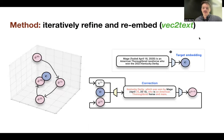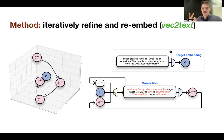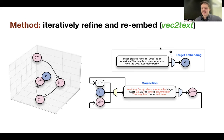Our method boils down to learning a yellow correction model that takes three things: the true embedding, the last guess of what the text was, and the embedding of the last guess. We also add e minus e-hat-t — the difference between where we are and where we want to go. The model knows its position in embedding space and how far off it is, and produces a new guess. In practice this means making an initial guess and recursively feeding guesses and their embeddings into the model along with the true target embedding, correcting the text over and over.